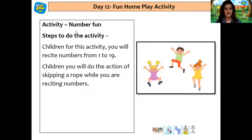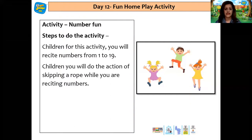I hope you all enjoyed playing the game. It's time for the home play activity for today. The activity is number 1 — you will recite numbers from 1 till 19, and do the action of skipping a rope while reciting. So we are going to recite numbers 1 till 19 and do the skipping action: 1, 2, 3, 4, 5, 6. This way, count the numbers until 19.